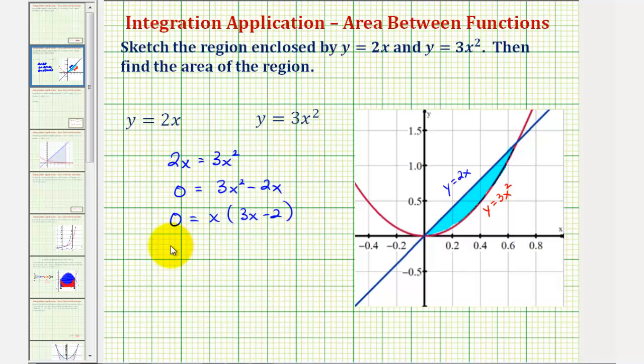So either x equals zero or 3x minus 2 equals zero. So we have x equals zero, and here we would add 2 and divide by 3. That would be x equals 2 thirds. Which means a, the lower limit of integration would be zero, and b, the upper limit of integration would be 2 thirds.